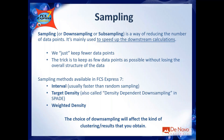The trick in downsampling is how you define which events to keep and which to drop. Usually in flow software the only available method is random sampling. FCS Express also has random sampling — specifically a slightly faster version called interval sampling — but the key advantage of FCS Express is that we also have two additional methods: target density and weighted density, which belong to the family of density-based downsampling.